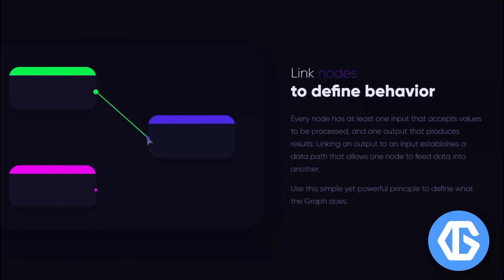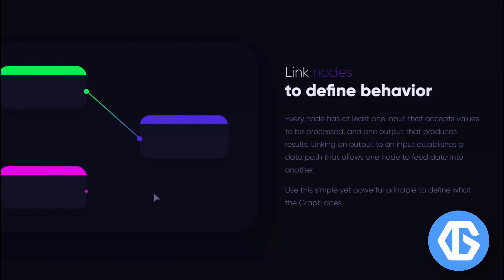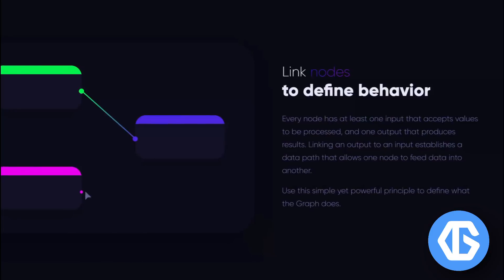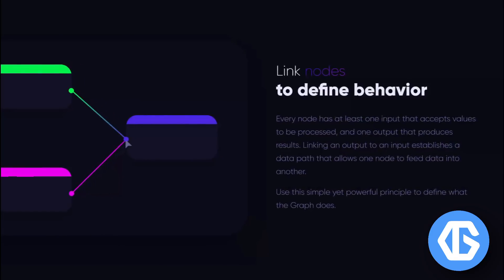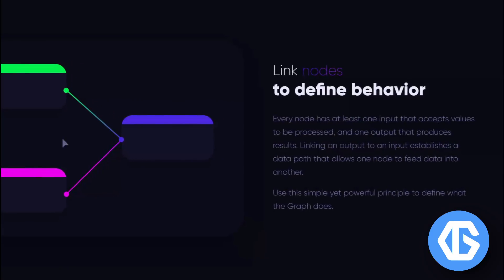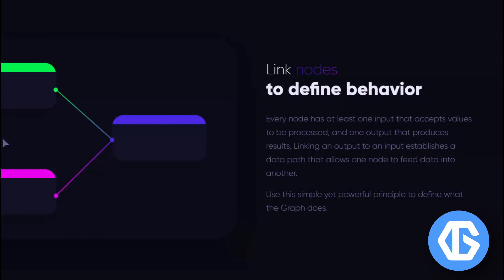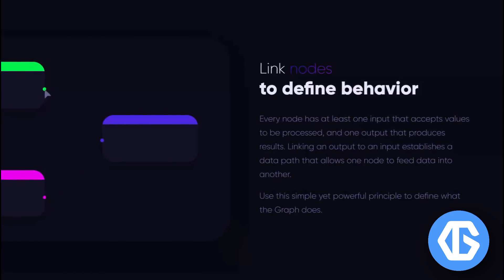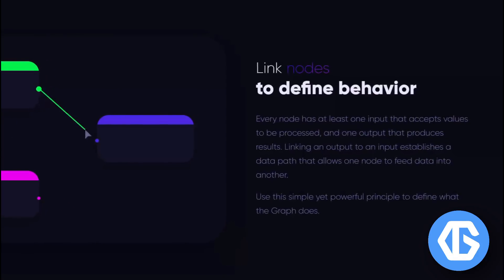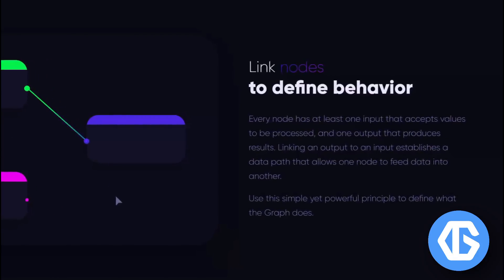The user can then send this data to Telegram, to Webhook, to Discord, or to a trading bot. With the help of GraphLink protocol, anything and everything can be automated to suit users' trading, DeFi, and other similar needs.